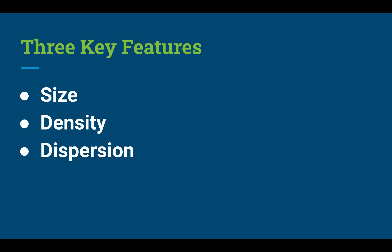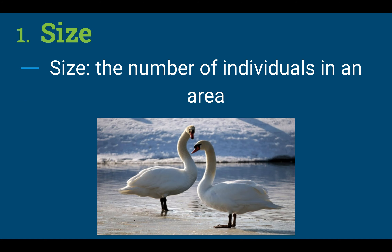The first factor is size, which is the number of individuals in an area. Looking at this picture, what is the size of the population? The size is two — there are two swans, so it's a population of two swans. The longer you look at those swans, the weirder they get. They almost remind me of the giraffe of the bird population because of those long necks.